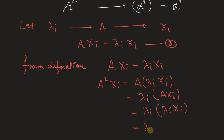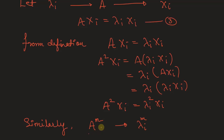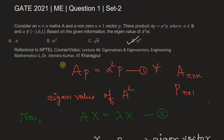This gives us A²·xᵢ = λᵢ²·xᵢ, showing that A² has eigenvalue λᵢ². Similarly, we can generalize: if λᵢ is the eigenvalue of a square matrix A, then Aᵐ will have eigenvalue λᵢᵐ. This completes the proof of the property. For more information on eigenvalues and eigenvectors, you can refer to the NPTEL course on Engineering Mathematics by Dr. Jitendra Kumar of IIT Kharagpur.